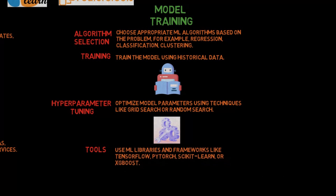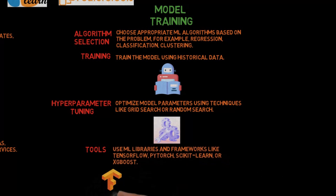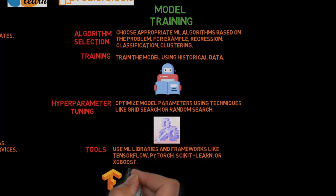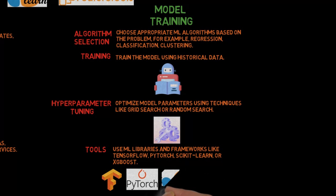Hyperparameter tuning: Optimize model parameters using techniques like grid search or random search. Tools: Use ML libraries and frameworks like TensorFlow, PyTorch, Scikit-Learn, or XGBoost.